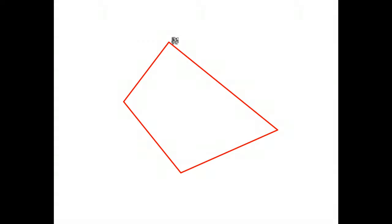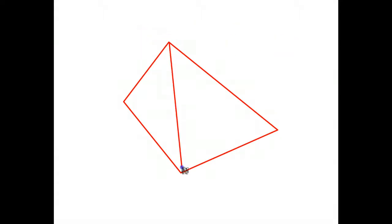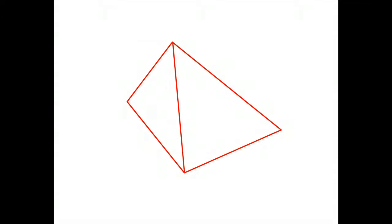What I want to do with this quadrilateral just here is break it up into two triangles. I'm going to do that by drawing a line from one corner to the opposite corner. Notice that what I have now are two triangles.